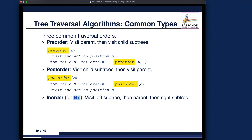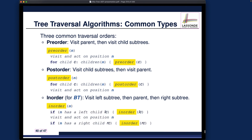For in-order, the principle to memorize is: recursively visit the left subtree (the subtree rooted at the left child), then visit the parent as the base case, then recursively visit the right subtree. The parent is visited in the middle. Think about it this way: the timing of visiting the parent defines the name of the order. Visit parent first: pre-order. Visit parent last: post-order. Visit parent in between the two children: in-order.